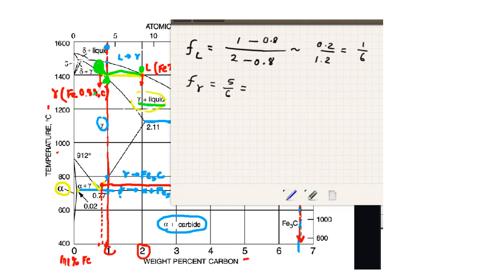And what about the fraction of gamma? Well, it's got to be what's left. It's 5 sixths. But let's go ahead and prove it to ourselves by computing it.